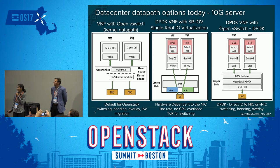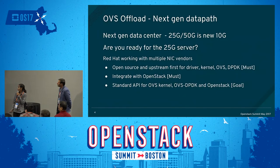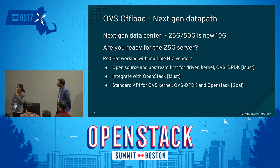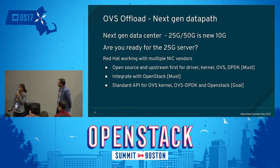With OVS-DPDK, you can get direct IO to the NIC and some switching options — bonding, overlay, some overlay offloads. But you have to give up a few cores on your host entirely devoted to poll mode drivers. So if you want to go beyond 10-gig to 25-gig — and 25-gig and 50-gig is the new 10-gig in the data center — we have to move to OVS offload as our next-gen technology. What Red Hat and our NIC vendors are doing is working to get OVS offload both in the kernel and in OVS and in DPDK. Our goal is to make sure we have everything upstream, all drivers upstream first, and to integrate with OpenStack. The goal is to standardize the API both in the OVS kernel, in OVS-DPDK, and OpenStack.